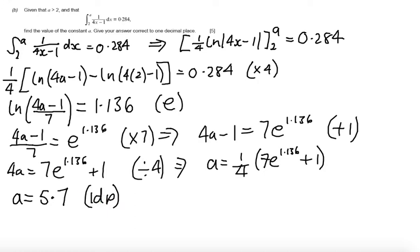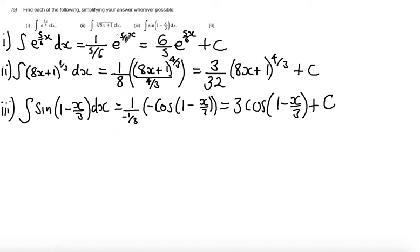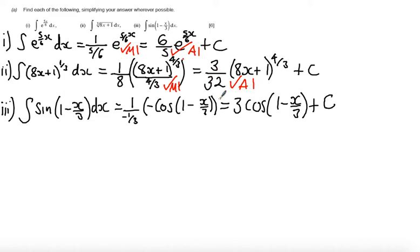Looking at how the marks are awarded: for part one there is a method mark if you integrated e to the 5 over 6x to e to the 5 over 6x, and an answer mark if you correctly got the coefficient 6 over 5. For part two, a method mark for correctly integrating to get 8x plus 1 to the power 4 thirds, and an answer mark for the correct coefficient. For part three, similarly a method mark for integrating sine to get cos(1 minus x over 3), and an answer mark for the correct coefficient of positive 3.